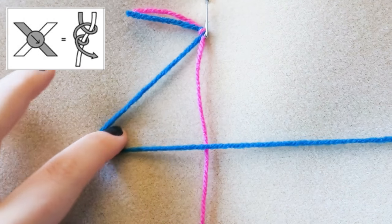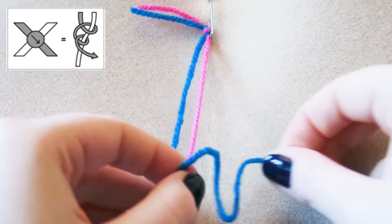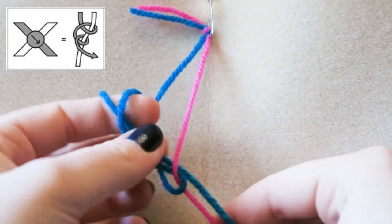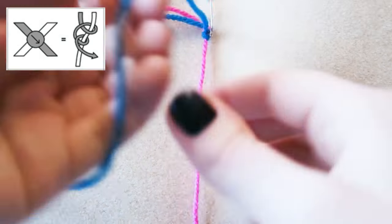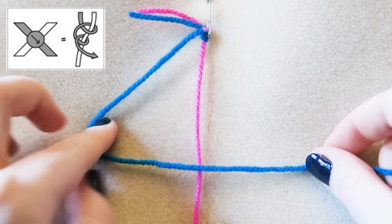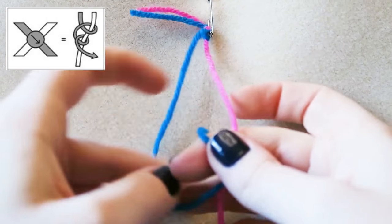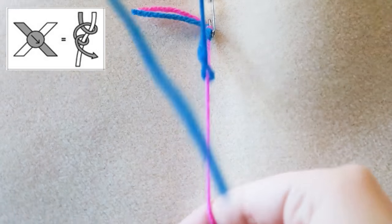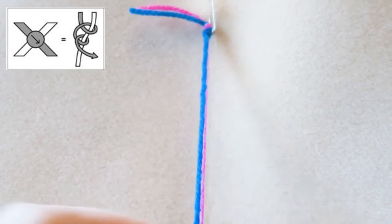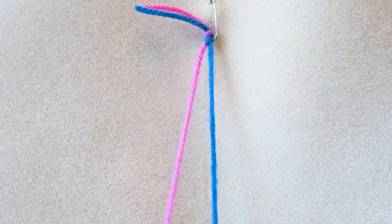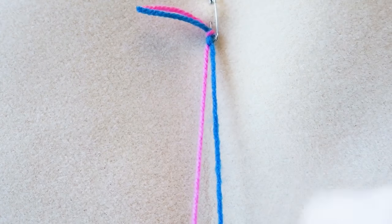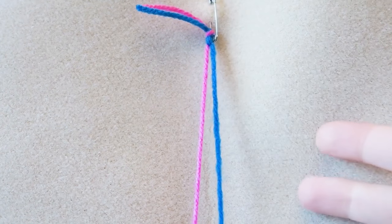Then you're going to wrap around, pull through the loop, and pull up. And then you're going to repeat that. So four shape, wrap the blue around the pink and pull up. And that is your basic forward knot. And now the blue is on the right hand side of the pink.